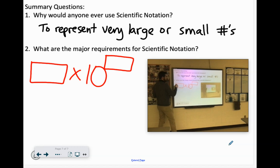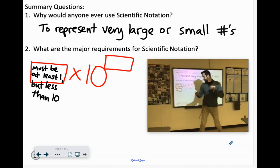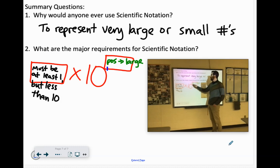Must be at least one, but less than 10. I really thought I could write way smaller than that. And then it's times 10 to the positive exponent if it's large and negative exponent if it's small.